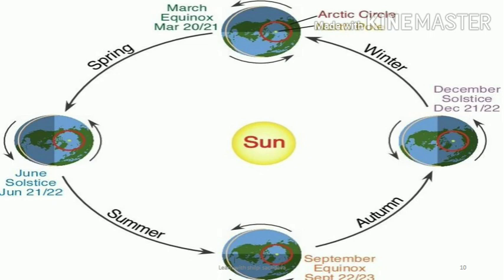At the same time, it is opposite in the Northern Hemisphere, which is at the backside of the Southern Hemisphere. The Northern Hemisphere receives the slant rays of the sun, and the days are short and nights are longer. Thus, the Northern Hemisphere experiences winter season during the month of December.